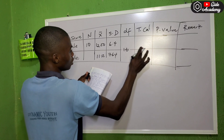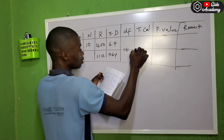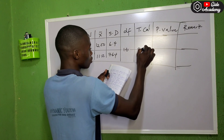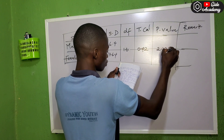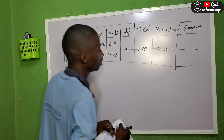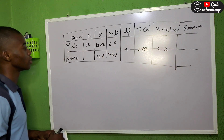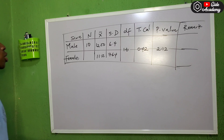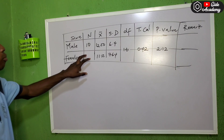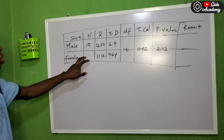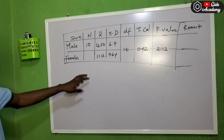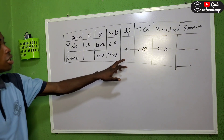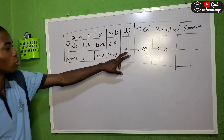We have 16 here, 0.42, 2.12. Now the equation might come with this format: calculate the number of females. So if you are asked to calculate the number of females, there is no way you can do that without getting the degree of freedom first.